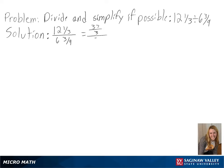Converting these we get 37 over 3 divided by 57 over 9. Now we are able to change the second fraction to its reciprocal since dividing two fractions is the same as multiplying by the reciprocal.